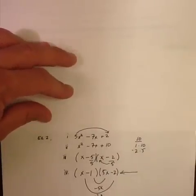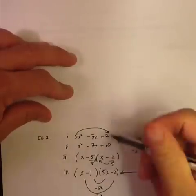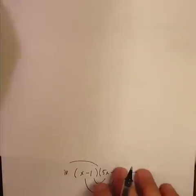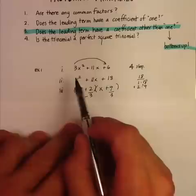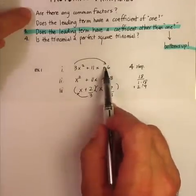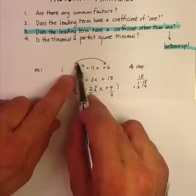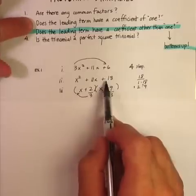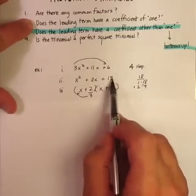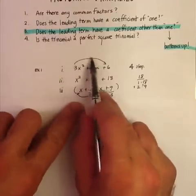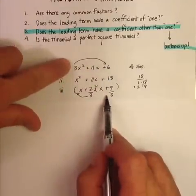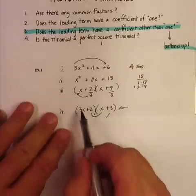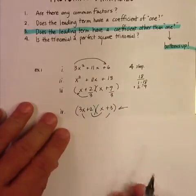Bottoms up is really good. There is actually a mathematical proof that proves why this works, and if I find it, I'll show you in a different video. Just to go through the steps: look for the leading coefficient, make sure there's nothing common first. Then, if the leading coefficient is something other than 1, multiply the last number. Factor it like it's a regular leading term with a coefficient of 1 — ask yourself what are the factors of that that add up to that. Then divide by whatever number you multiplied by, and reduce as much as possible. If it doesn't reduce, you bring the bottom up. If it does reduce, you leave it alone. I hope that was helpful.